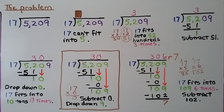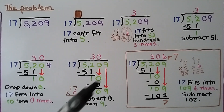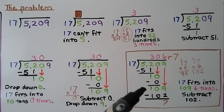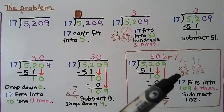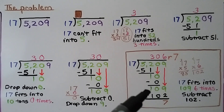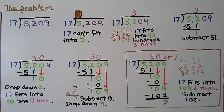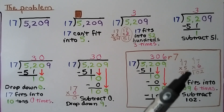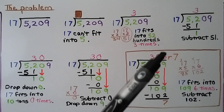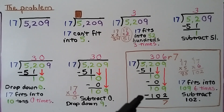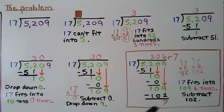Now it's the 9's turn to come down. We need to see how many 17s fit into 109. We try 17 times 5 — that's 85, kind of low. We could possibly get another 17, so we try 17 times 6, which is 102 — a good amount to subtract from 109. So we put a 6 above the 9 and subtract 102, getting a remainder of 7. Our quotient is 306 remainder 7.